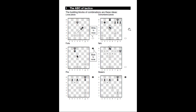Outnumbered pieces: the circled black knight is defended by a rook and a queen, but white is attacking with a bishop, a rook, and a queen — three against two. White will win if it comes to a series of exchanges. The third diagram shows forks, sometimes called double attacks, where a piece attacks two things at once and you can only save one of them.